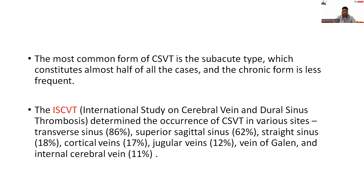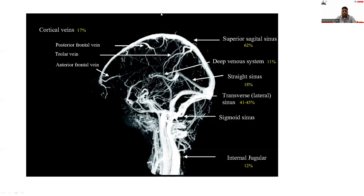The ISCVT — International Study on Cerebral Vein and Dural Sinus Thrombosis — determined the occurrence of CSVT in various sites. The transverse sinus constitutes the major percentage of CSVT, followed by the superior sagittal sinus, straight sinus, cortical veins, jugular veins, vein of Galen, and internal cerebral veins. The superior sagittal sinus accounts for 62%, followed by the transverse sinus at 41 to 45%. On two sagittal sites combined, it constitutes 82%.